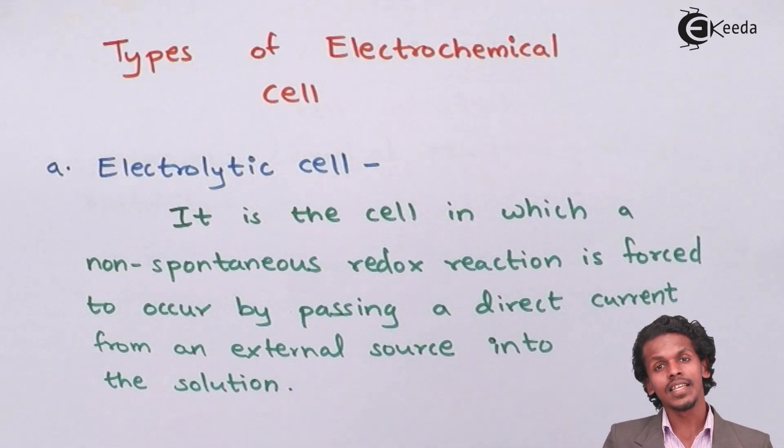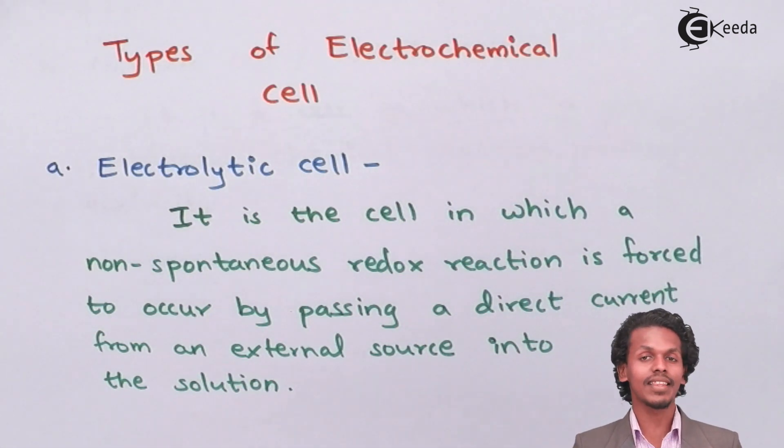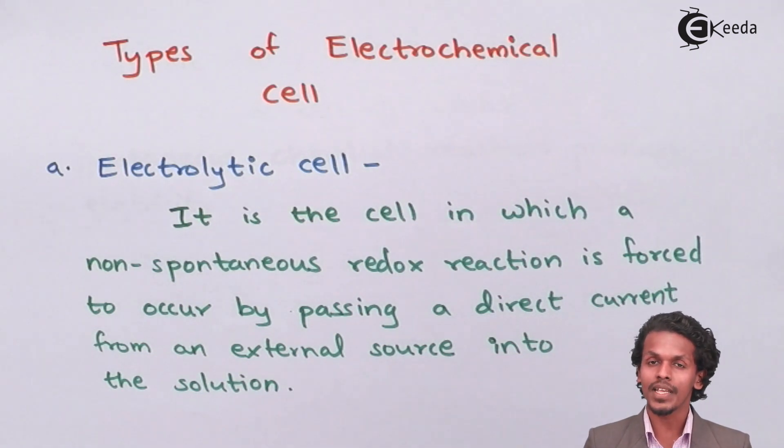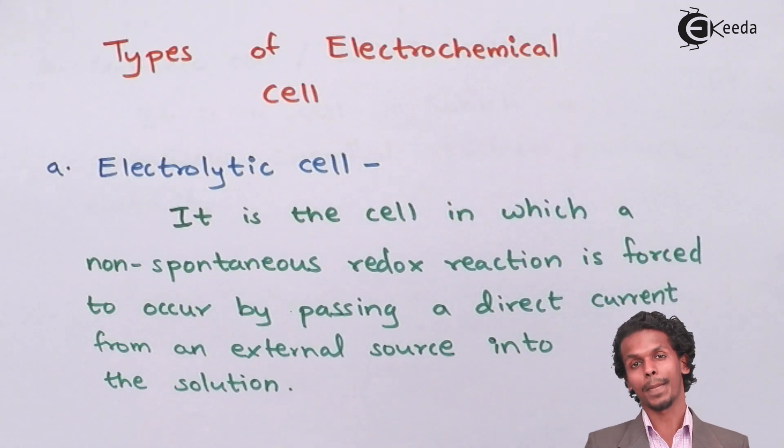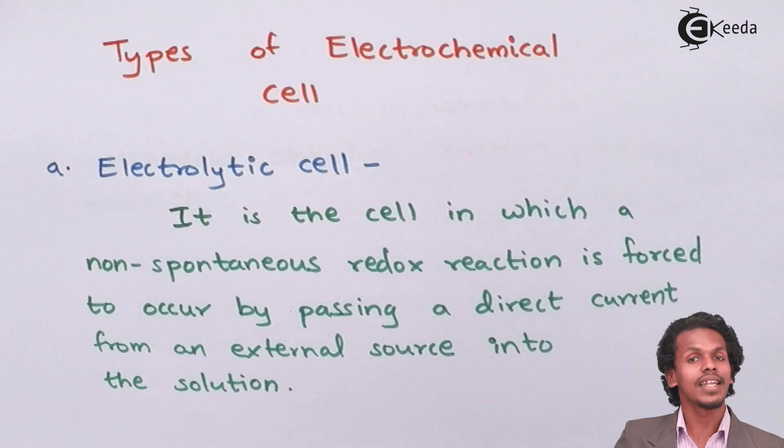And in this case the non-spontaneous means that the chemicals are not reactive with each other in a normal condition. But for that thing we have to supply electricity so that the flow of electron will take place and hence the redox reaction will take place. And yes, then only the reaction will occur. So this kind of reaction can be usually observed in electroplating.